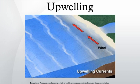There are at least five types of upwelling: coastal upwelling, large-scale wind-driven upwelling in the ocean interior, upwelling associated with eddies, topographically associated upwelling, and broad diffusive upwelling in the ocean interior.